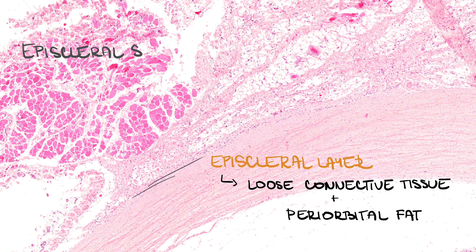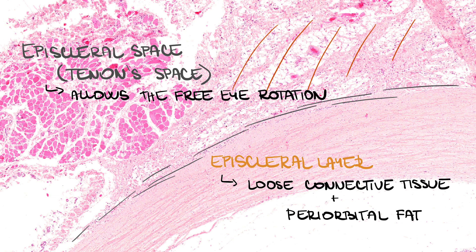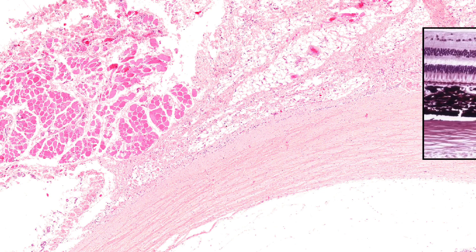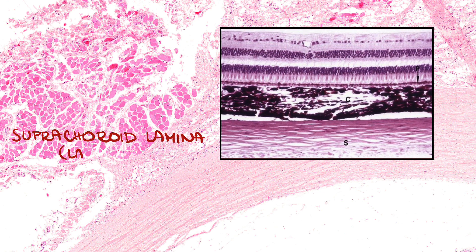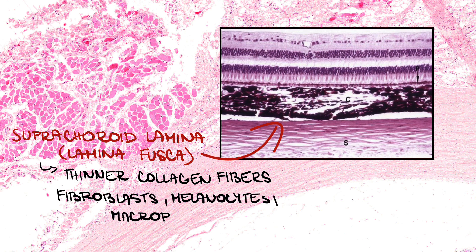The episcleral space — or Tenon's space — is between the episcleral layer and substantia propria, and allows free eye rotation inside the orbital cavity. Below the substantia propria of the sclera, there is the suprachoroidal lamina — lamina fusca — the inner aspect adjacent to the choroid, which contains thinner collagen fibers and elastic fibers as well as fibroblasts, melanocytes and macrophages.